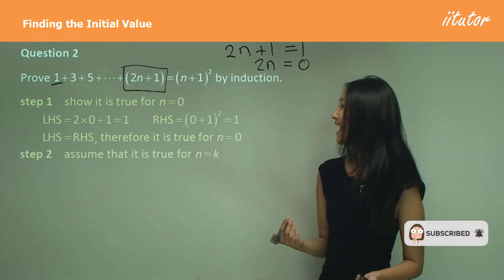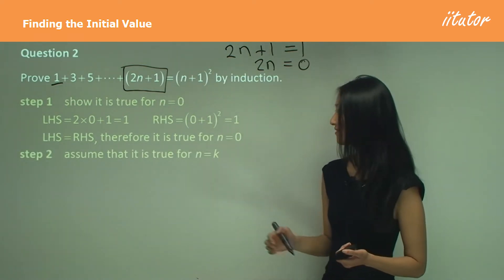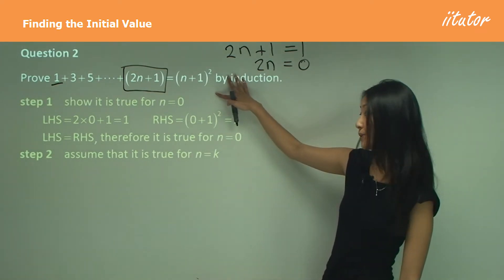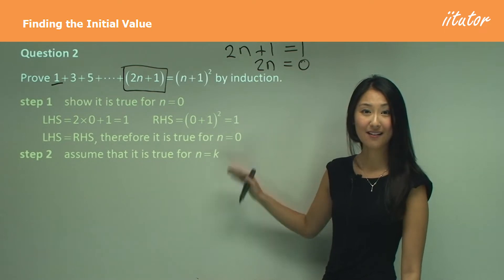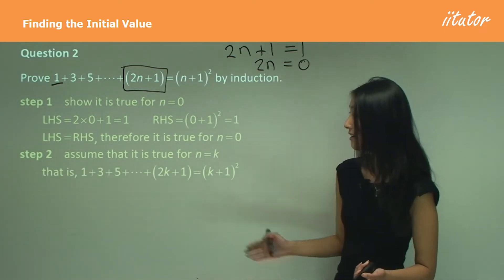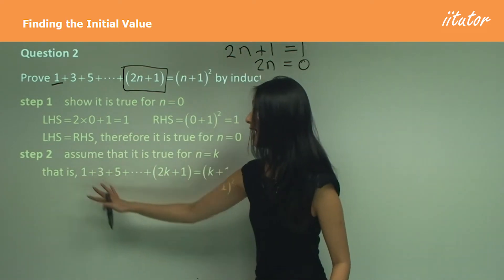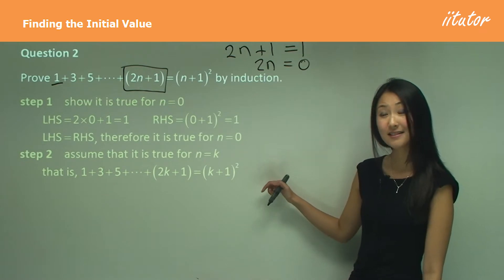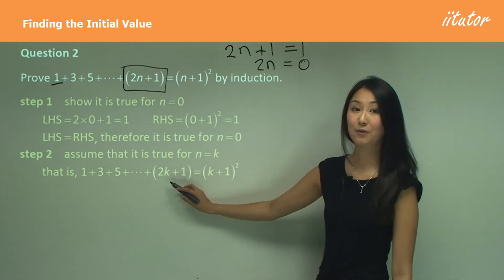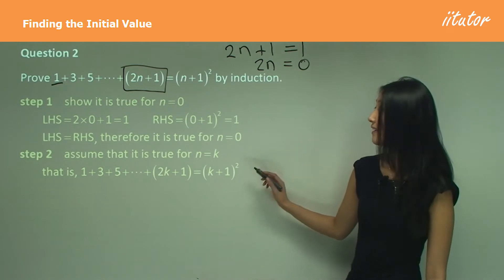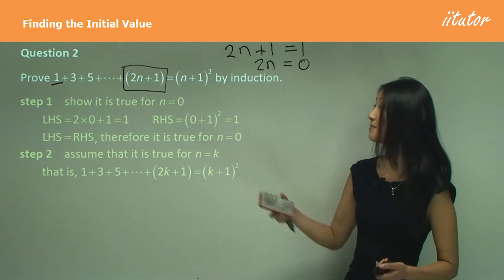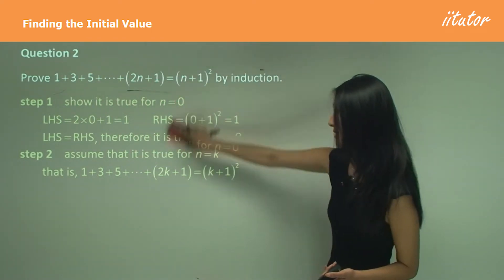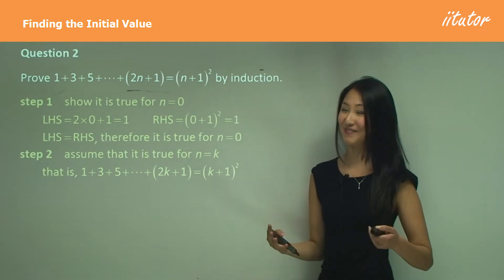Remember what step 2 was? That's the assumption we make. Step 2 is making the assumption that this is true for n equals k — that is, when we substitute in k, the left hand side actually equals the right hand side. All we've done is put k into wherever there's an n. Remember, step 2 is important because we're always going to use that assumption in step 3, and if you don't use it, something is wrong.